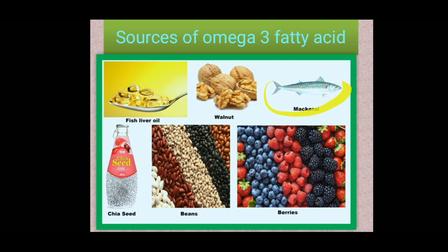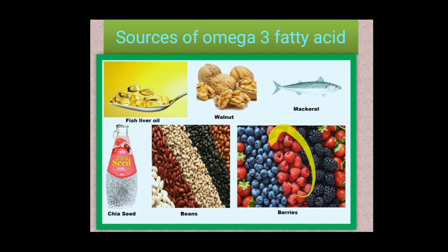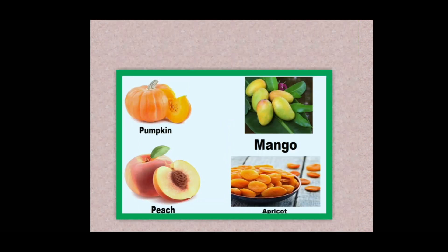Other omega-3 sources include chia seeds — small mustard-like seeds that become jelly-like when soaked in water, commonly seen in faloodas and fresh juices — variety of beans like soya beans and rajma, and berries including strawberry, blueberry, mulberry, and raspberry.